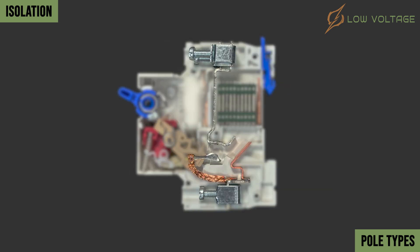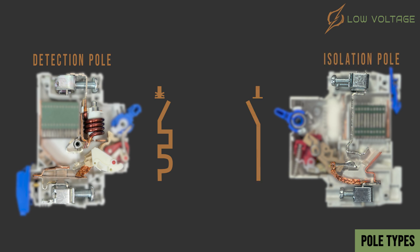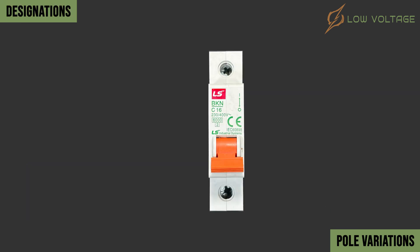When the thermal and magnetic units are not installed, then the pole will not detect faults, and will not offer protection — it will be only for isolation. Now we can say, when the protection units are installed, then we have a detection pole having this symbol. Now we know the difference between a detection pole and an isolation pole. Let's discover the pole variations in the real world.